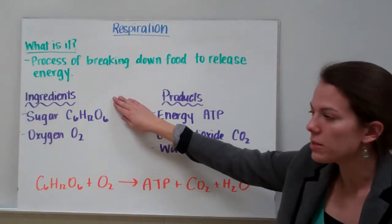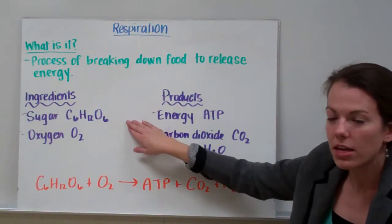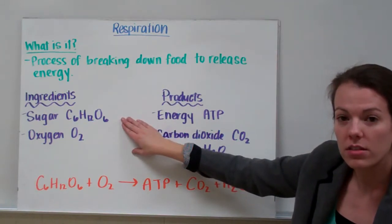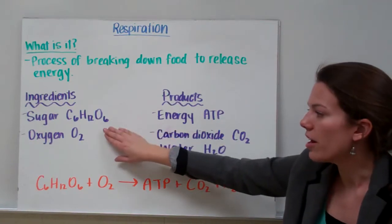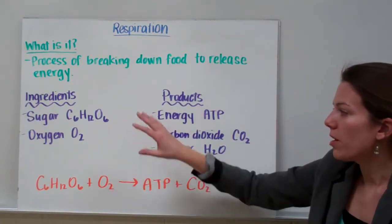Our ingredients for respiration are our food. In this case, we're going to say our food is sugar. Remember from our photosynthesis video that sugar is C6H12O6. We take sugar and oxygen gas, O2, and combine those.